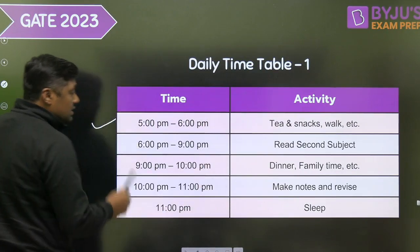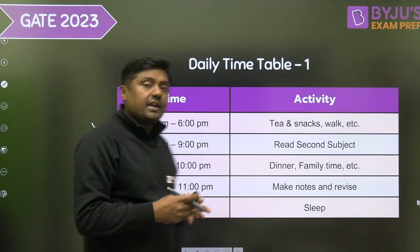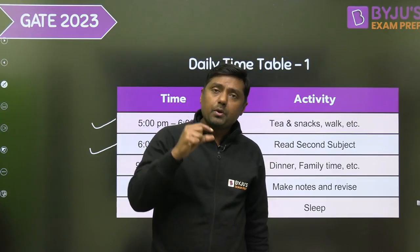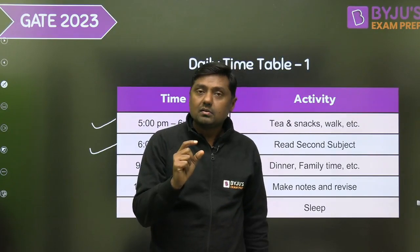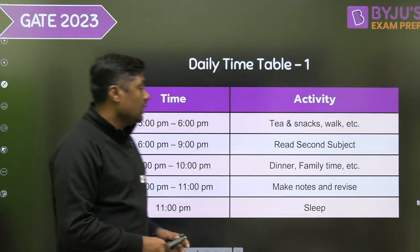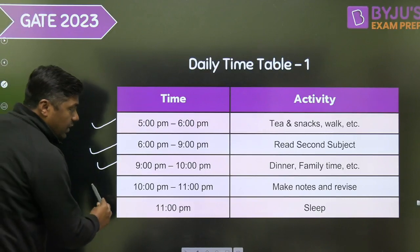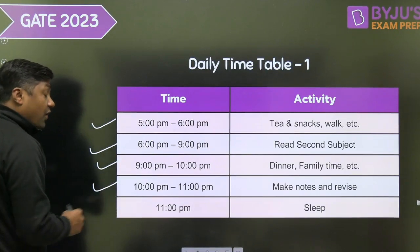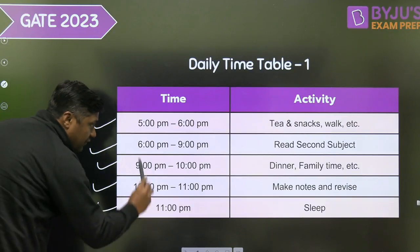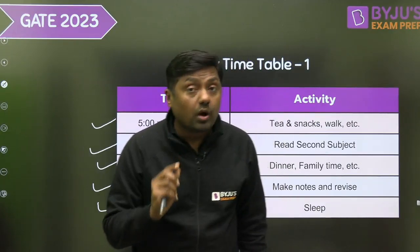From 5 to 6 PM, have tea or snacks and go for a long walk. From 6 to 9 PM, read your second subject — if you find any difficulty, work on it. You can also prepare small topics, but not very new ones. From 9 to 10 PM is dinner and family time. From 10 to 11 PM, make notes and revise them. A minimum of 6 to 7 hours of sleep is required.